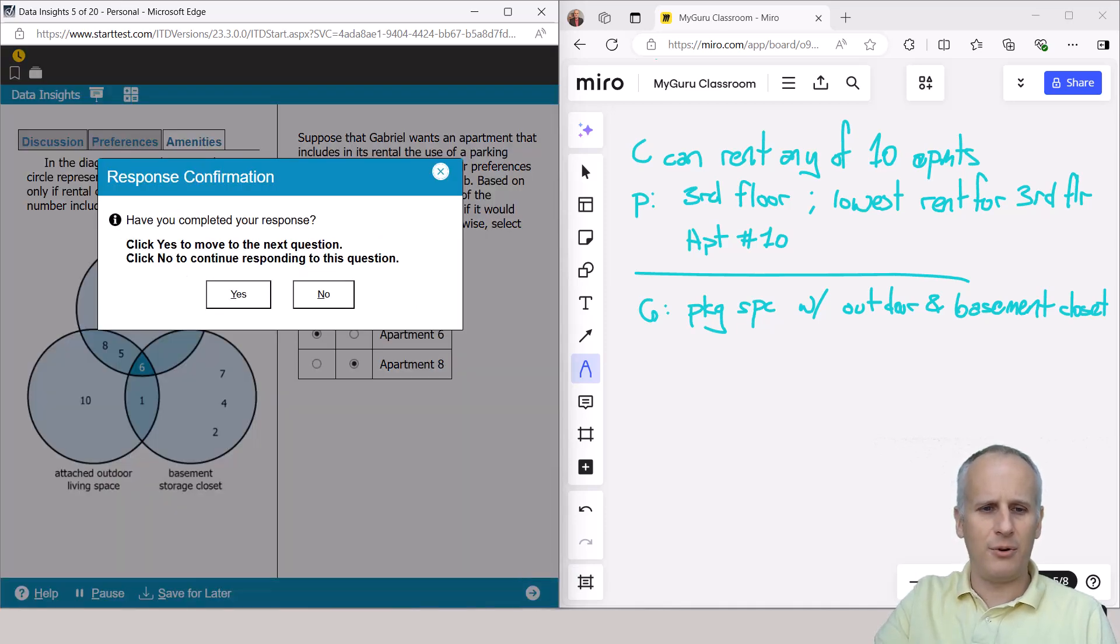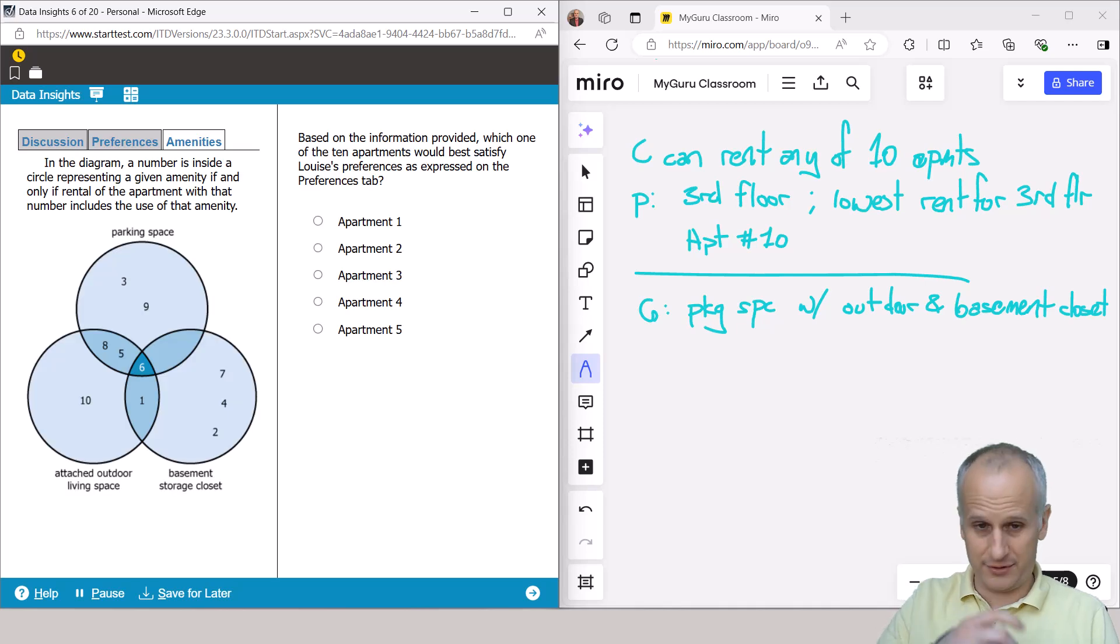And now we'll move to our last of the three question tasks. And so we're going to take notes again, and we'll just draw a little line underneath. And you probably are going to again have all of your notes ready for you as you're working through all three of the individual question slides. So we read, based on the information provided, which one of the 10 apartments would best satisfy Louise's preferences as expressed on the preferences tab.